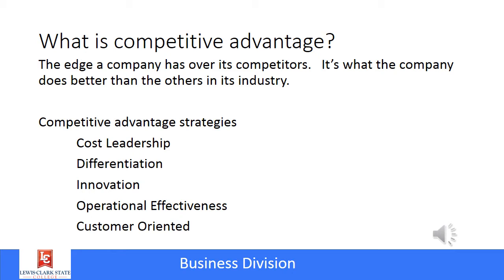Product differentiation means having a better or different product than the competitors. Innovation means coming up with better and faster products. Operational effectiveness means doing whatever they do quicker than anybody else — for instance, Walmart is very good at getting products all over the country. And then a company can be very customer-focused, which can command higher prices and be their competitive advantage.